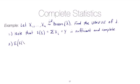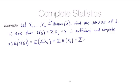If we take the expectation of S(X) itself and got lambda, that would mean S(X) is unbiased and would be our best unbiased estimator. The expectation of our sufficient and complete statistic is the expectation of the sum of the Xi's. That's the sum of the expectation of each individual Xi, which is the sum of n lambdas, giving us n times lambda. So S(X) itself is not an unbiased estimator of lambda, but this suggests how we would get an unbiased estimator of lambda.